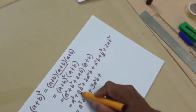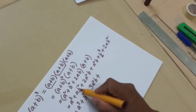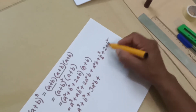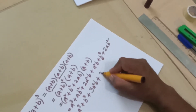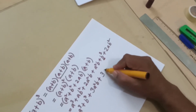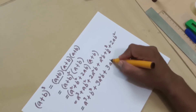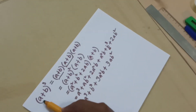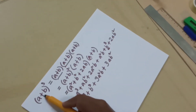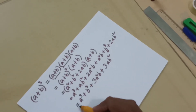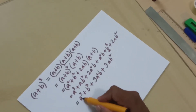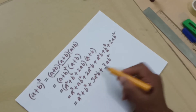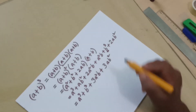Similarly, we have ab² and 2ab², so all together we have 3ab². So (a + b) whole cubed is equal to a³ + b³ + 3a²b + 3ab².